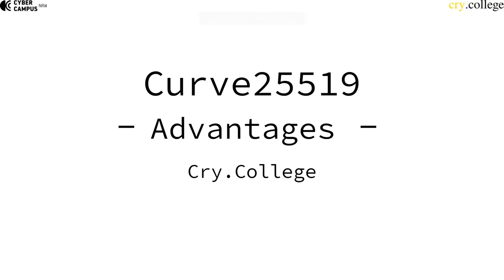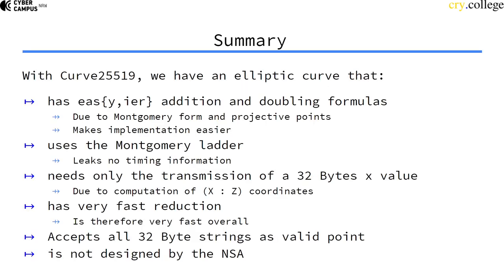Now that you know what Curve 25519 is, let's talk about its advantages in a bit more detail. With Curve 25519, we have an elliptic curve that has simpler addition and doubling formulas than Weierstrass curves, because it's a Montgomery curve.